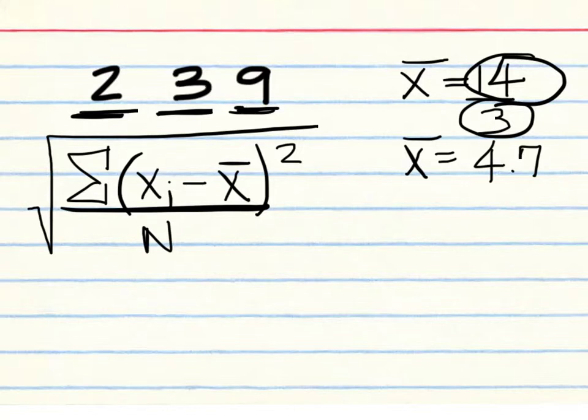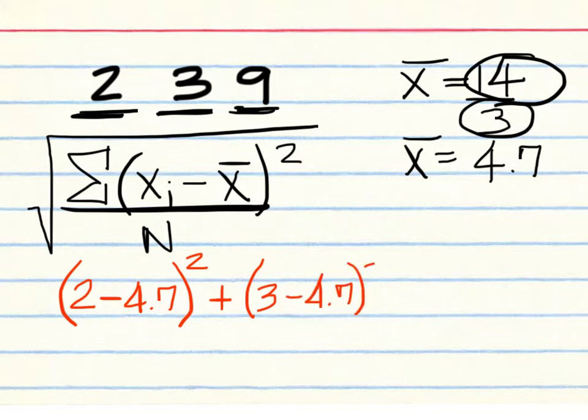So here's what it is in simple language. What's your first number in the list? So 2 and subtract the mean, which is 4.7. And then square the result. Whatever you get, square it. Now go on to the second number. Second number is 3. Subtract the mean, 4.7. Square the result. And then you have that last number, 9. Subtract the mean, which is 4.7. And then square the result.